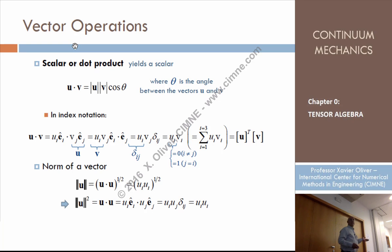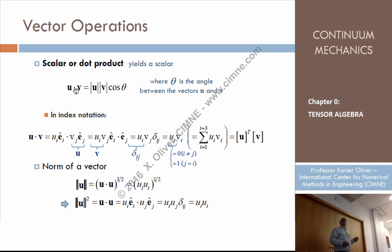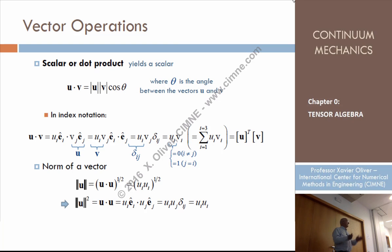Another operation we can do with vectors is the scalar product of two vectors, also called the dot product. If we have vector u and vector v, and we want to do the scalar — also called the dot product — it is denoted by inserting a dot between them. That's why it's called dot product. You already know that. To compute it, you multiply the norm of the first vector times the norm of the second vector, multiplied by the cosine of the angle made by the two vectors. That's the original definition.